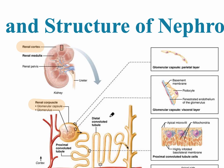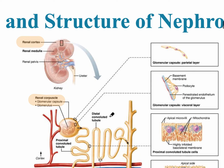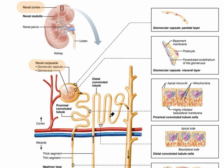The next part of the nephron is the renal tubule. On the right you can see the histology of the glomerular capsule — its outer layer and inner layer. The visceral layer is where the podocytes are, which are foot-like modifications of epithelium.